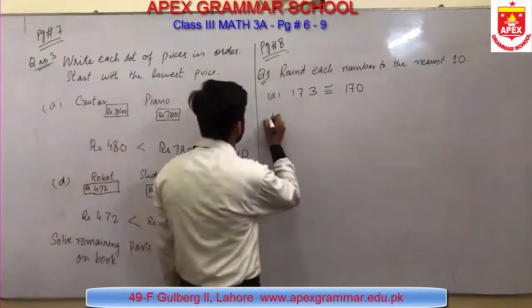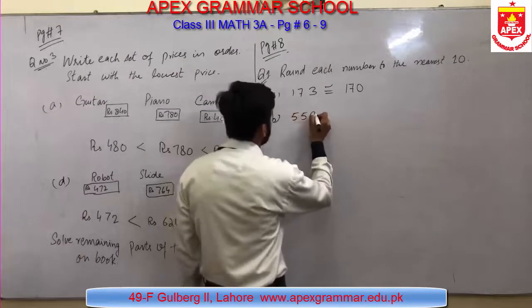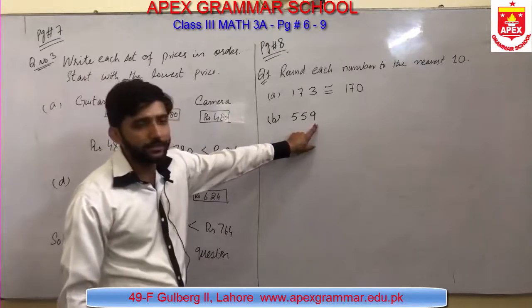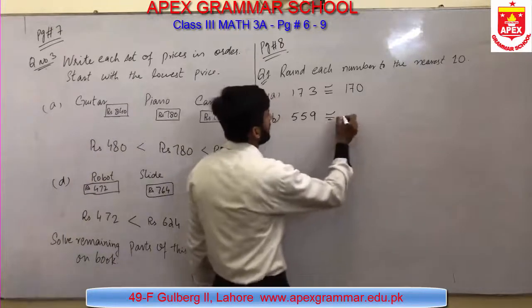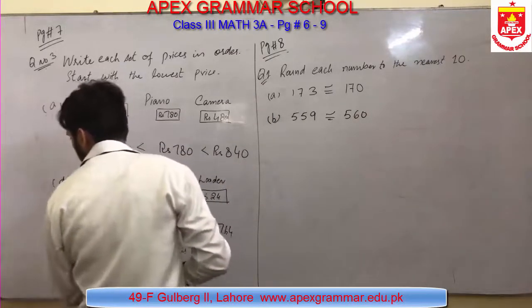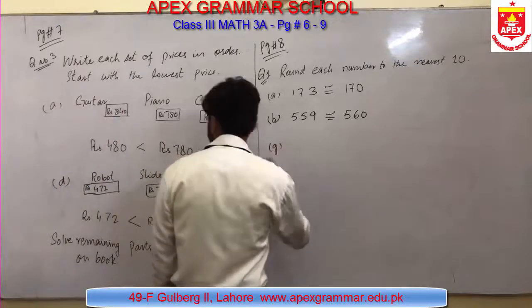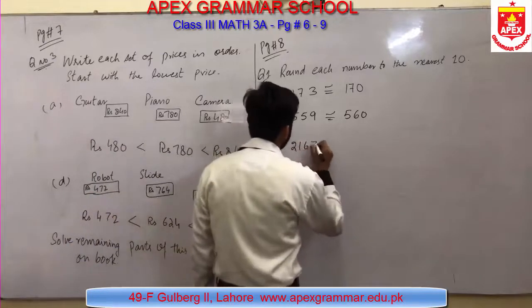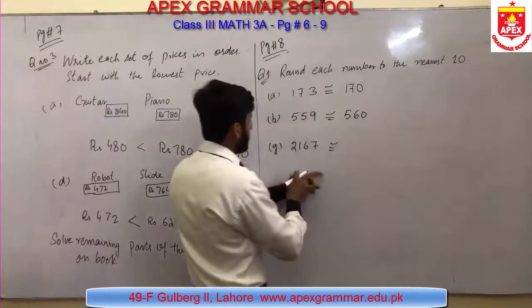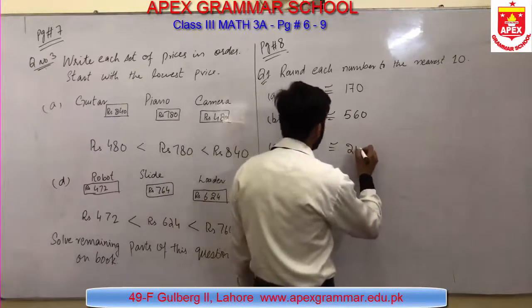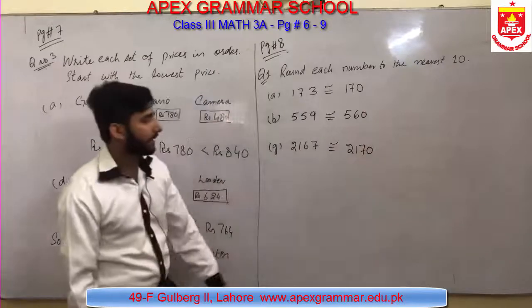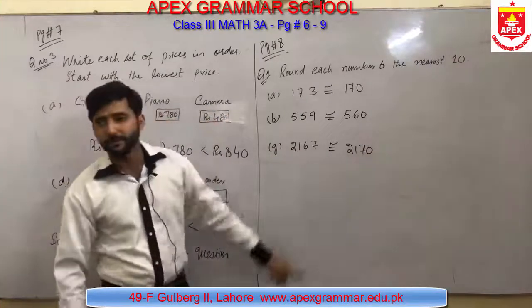Part B is 559. The last digit is 9, which is greater than 5, so we move forward to 560. Part G is the 4-digit number 2167. Last digit is 7, which is greater than 5, so we move forward. After 67, the nearest zero number is 70, so 2167 rounds to 2170, while 21 remains the same.